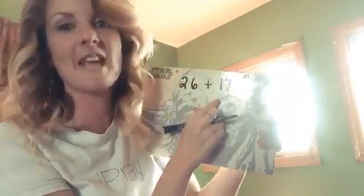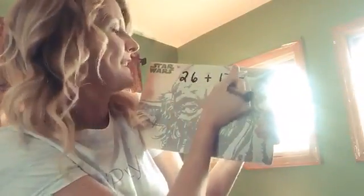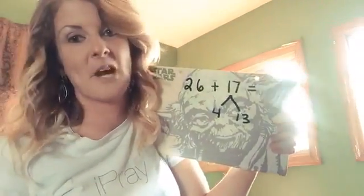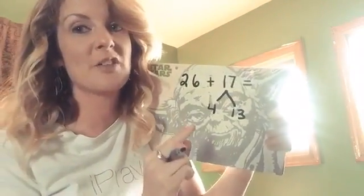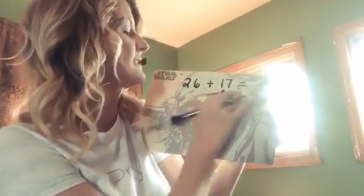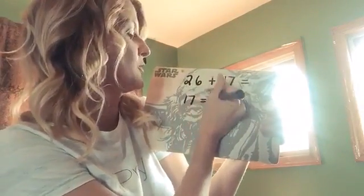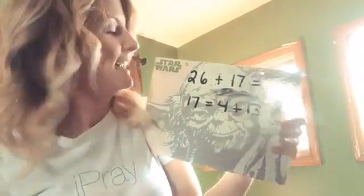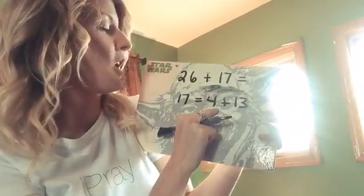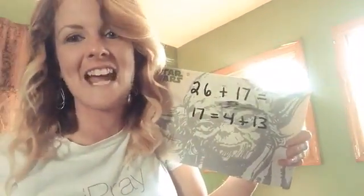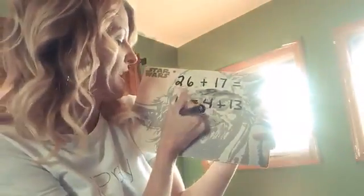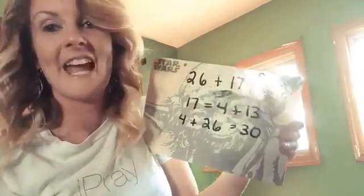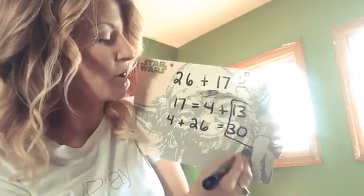Let's start with 17. We're going to say the factors of 17 for this are 4 and 13. So what your child is supposed to write is 17 equals 4 plus 13. Now we're going to take this 4, and we know if we add 4 to 26 it gives us that nice 30 — that tens. So we're going to say 4 plus 26 equals 30, and now we've got to add this 13 into the equation.